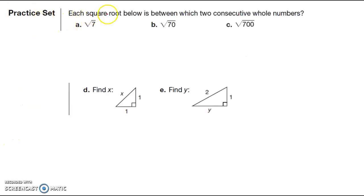It says each square root below is between two consecutive, meaning one right after another, whole numbers. I know that the square root of four is equal to two, and the square root of one is equal to one. I know the square root of nine is equal to three, so seven is between the square root of four and square root of nine, so it's going to be between two and three, and that's my answer here.